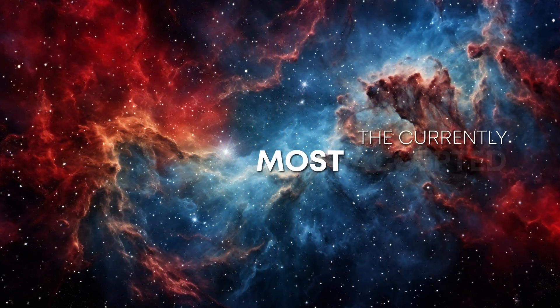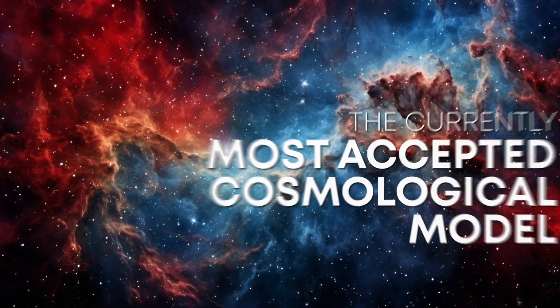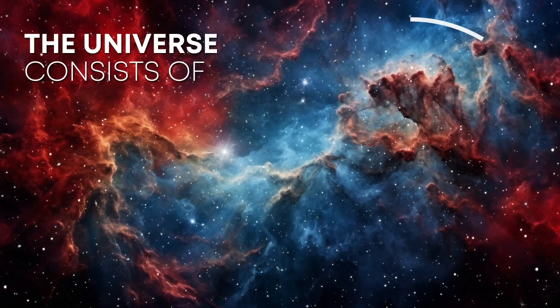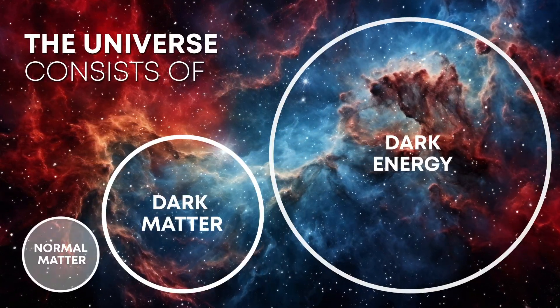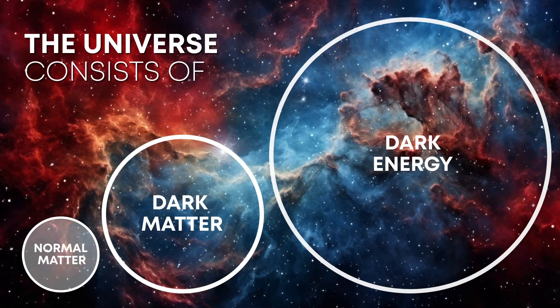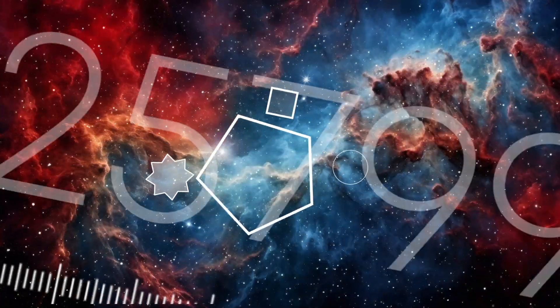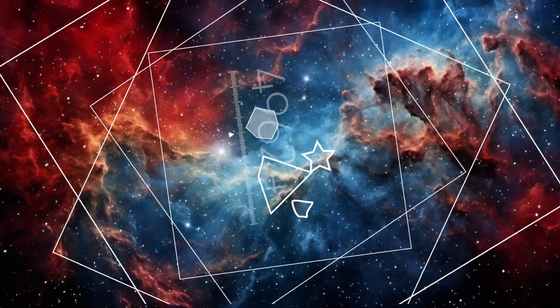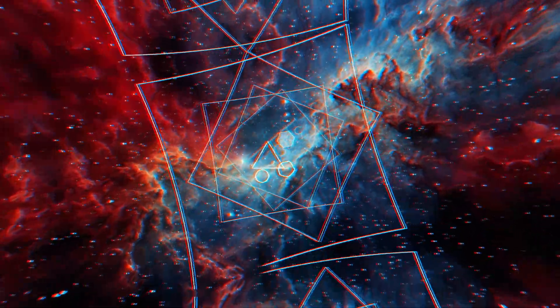The currently most accepted cosmological model tells us that the universe consists of dark energy, dark matter, and a little bit of normal matter. But how did these ingredients change throughout history? And how will they affect the future?